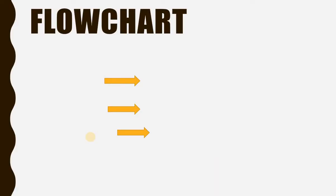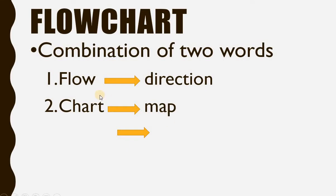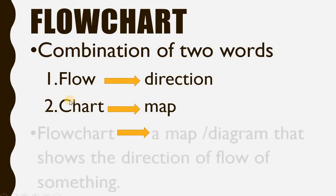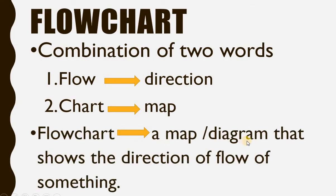First of all, I will tell you that flowchart is a combination of two words — flow and chart — where flow means the direction of something moving, and chart means a map. So flowchart means a map or a diagram that shows the direction of flow of something.